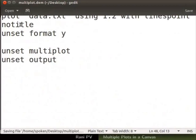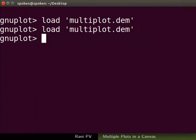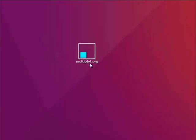Press ctrl s to save the file and minimize gedit. Go back to the terminal from where gnuplot was opened. If you had closed gnuplot, please open gnuplot again. Run the updated multiplot.dem script. Now the graphics window does not open since the output is a svg file. Enter the command quit to quit gnuplot. Go to desktop.